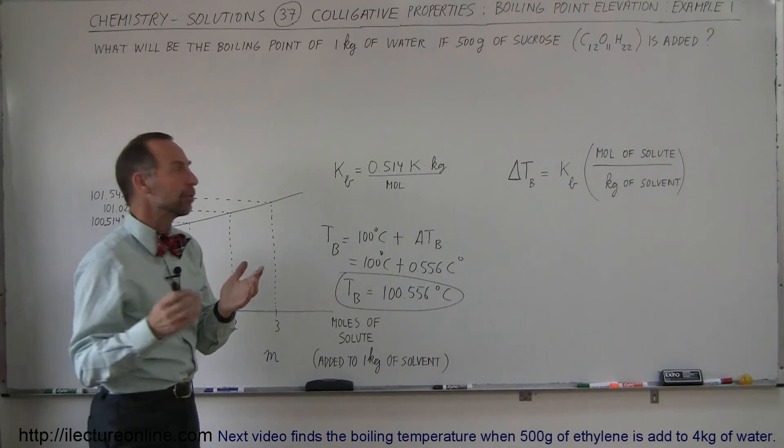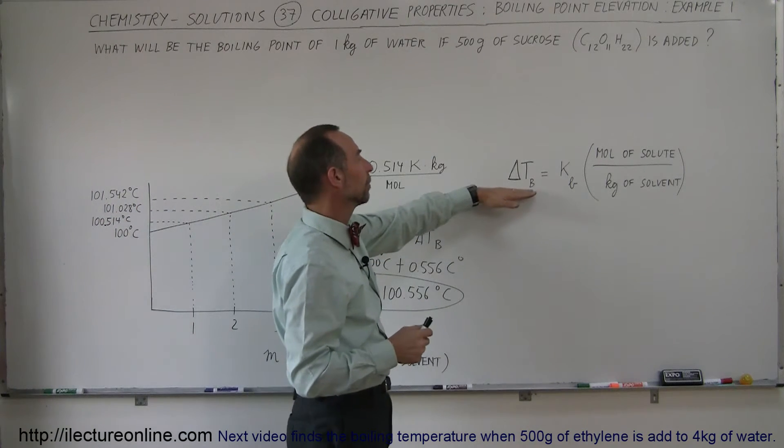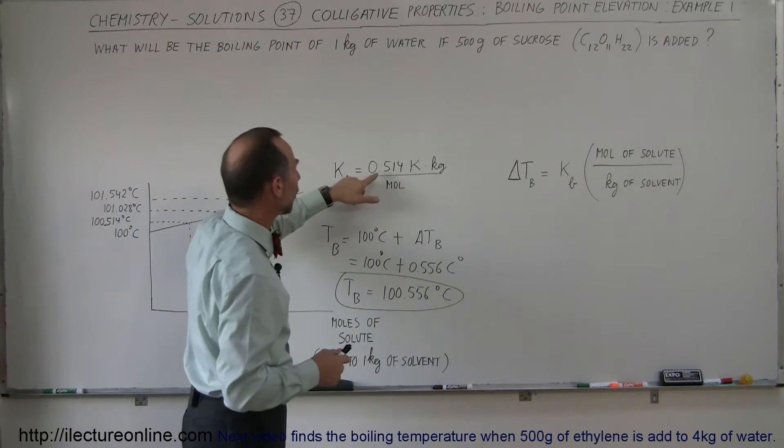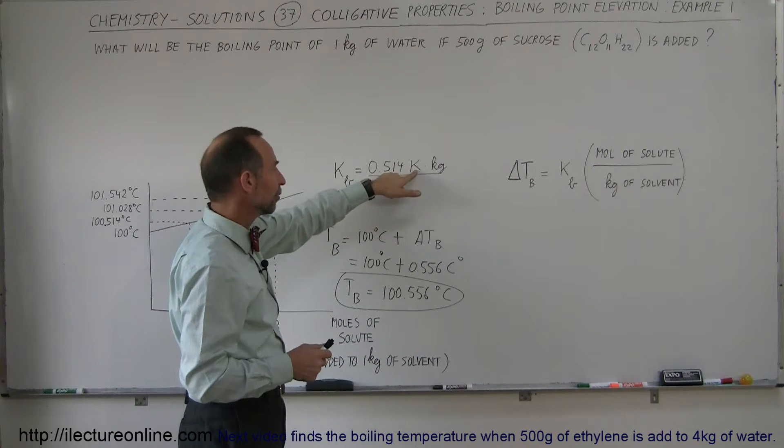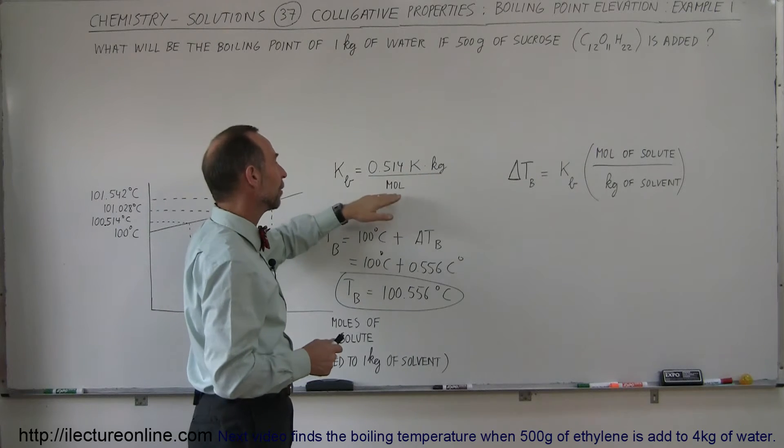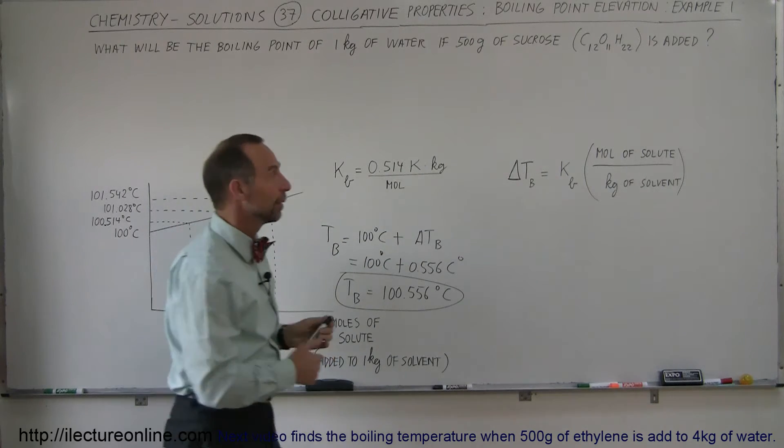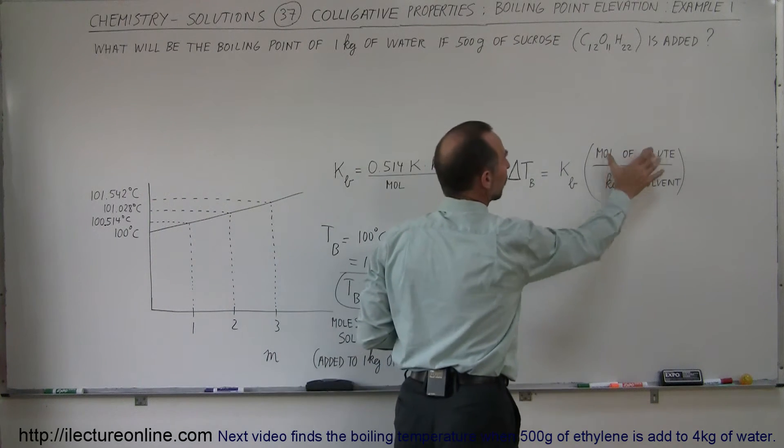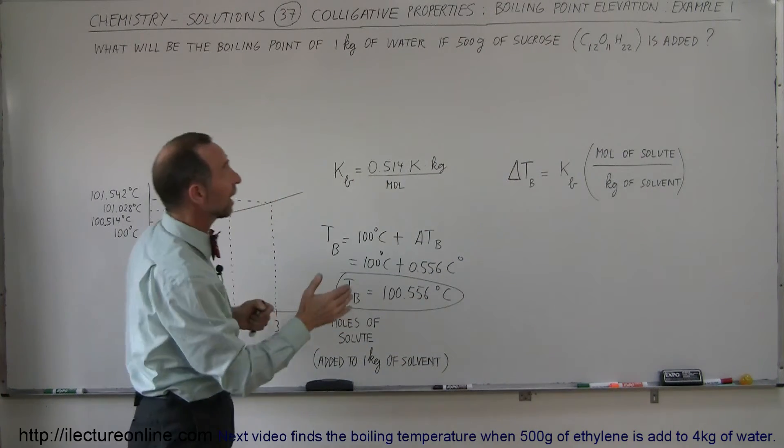And so the equation says that the change in the boiling point temperature is equal to the constant for water, which is 0.514 Kelvin per kilogram of water per mole of solute added. We multiply it times the moles of solute and divide it by the kilograms of solvent.